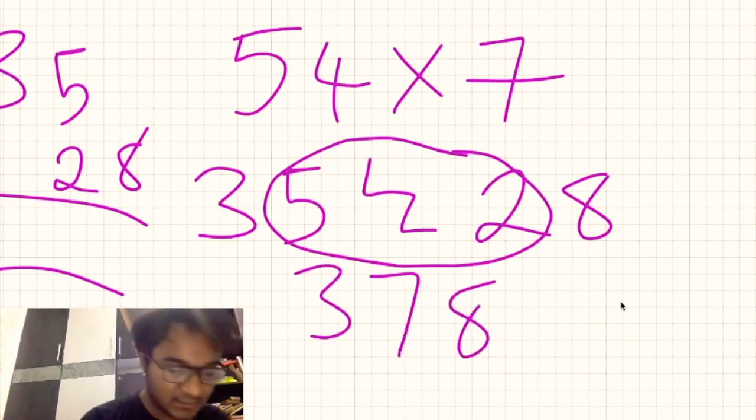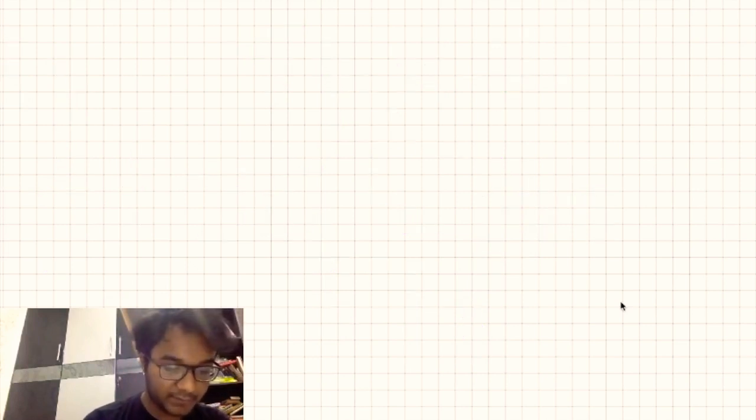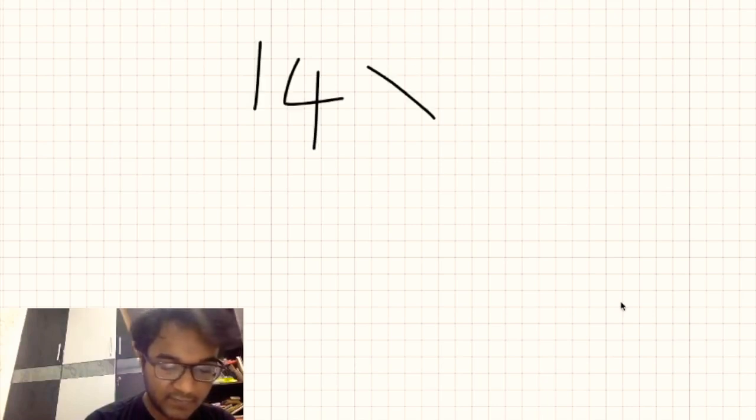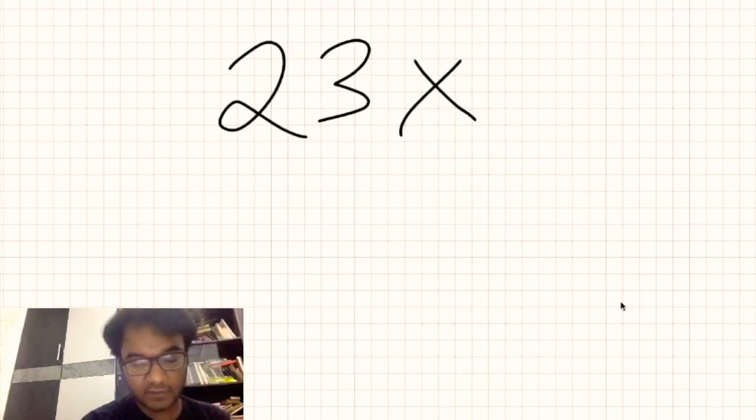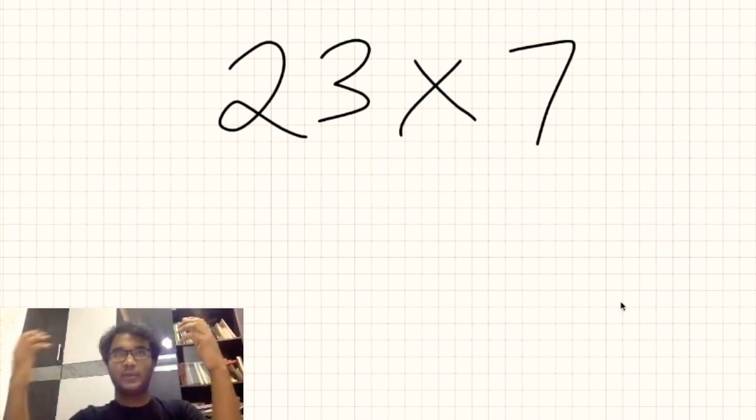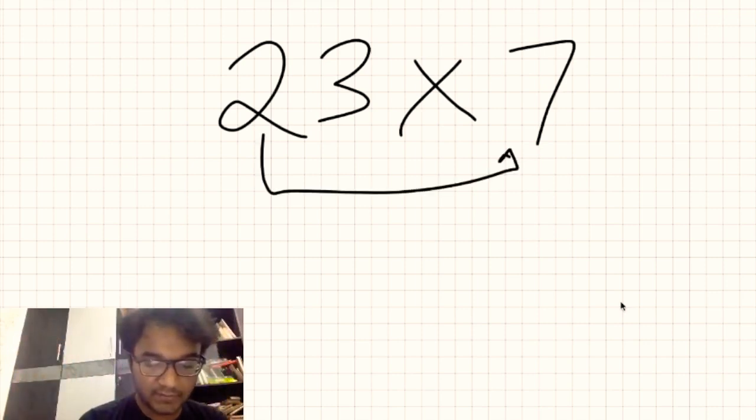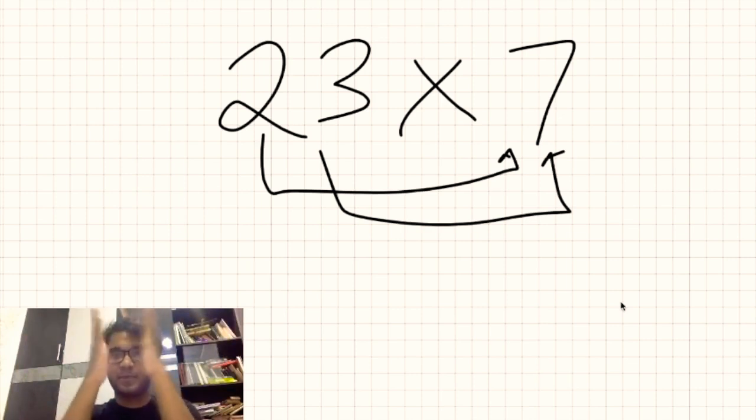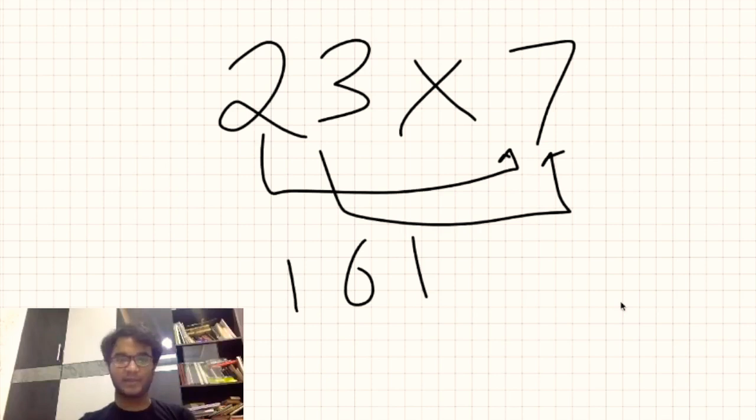That's pretty much it. Now let's even abstract this out and not write the step which I've written there. So let's take 23 times 7. So in our head, 14, 21, 7 times 2 is 14. This is 21. 14, 21, there's a step between 4 and 2. So 2 and 4 come together. So it's 161. I hope you got that right.